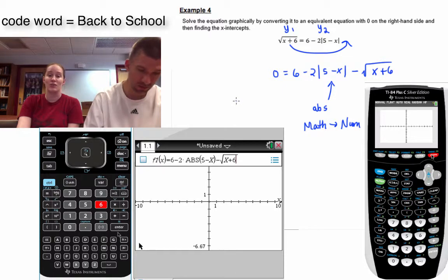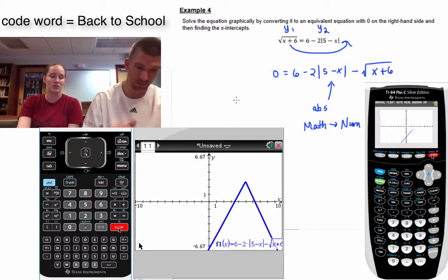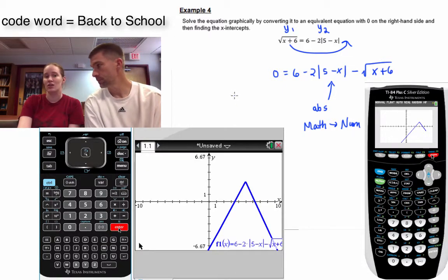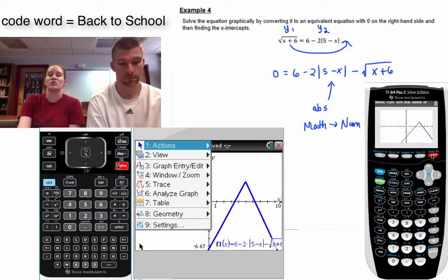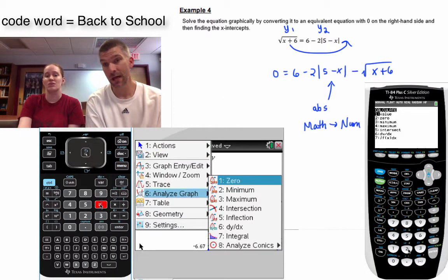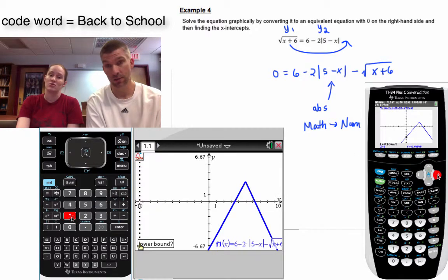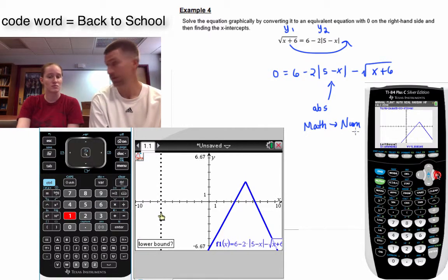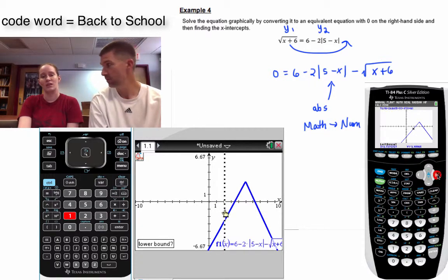So we're going to graph that sucker. Now when you graph, especially if you did some scatterplotting earlier, you'd want to zoom standard. That's not always the best window to look at, but it's a good start. It gets you in the neighborhood of the origin with a good view.